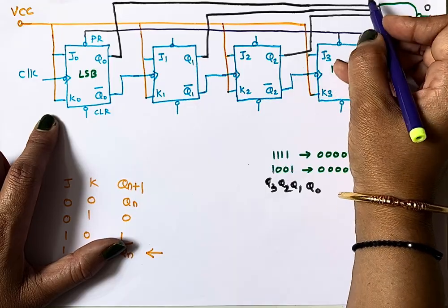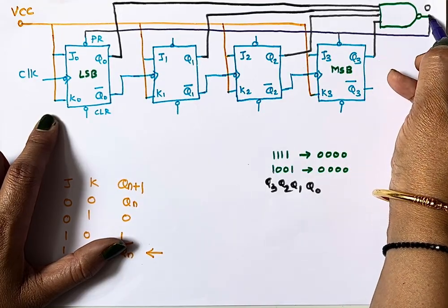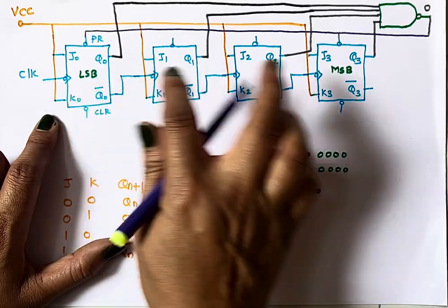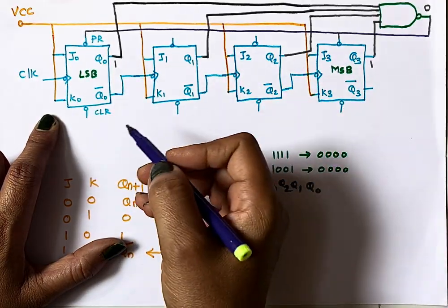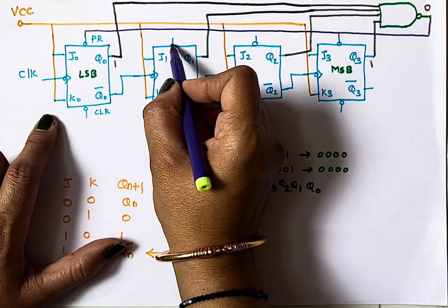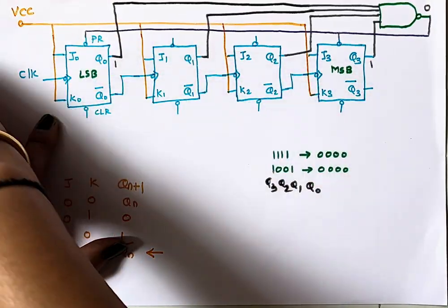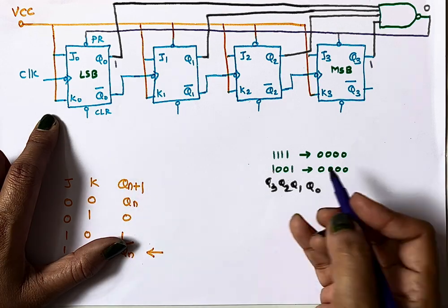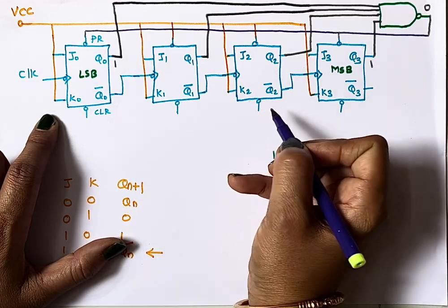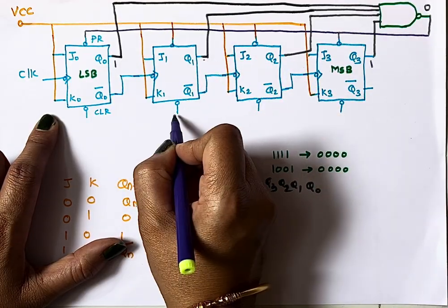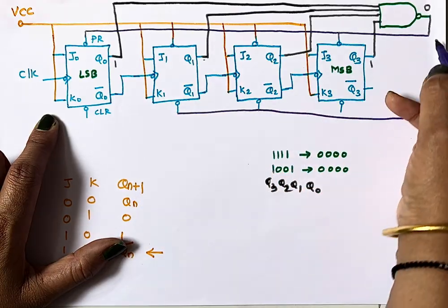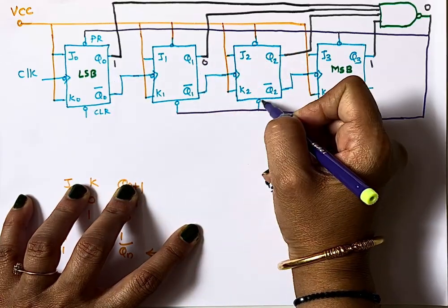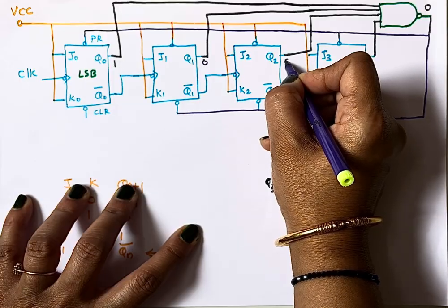The clear inputs of Q1 and Q2 are connected to the NAND gate output. When the NAND gate output becomes 0, these flip-flops are cleared, making Q1=0 and Q2=0. So instead of 1111 appearing after 0000, the outputs immediately become 1001, which is 9. The circuit then naturally down-counts from 9 to 0 again using the Q-bar clock connections.